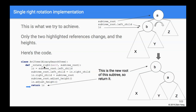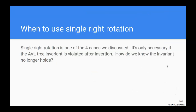Finally, as usual, any method that changes the structure of a subtree must return the new root of that subtree. In this case it's guaranteed to be a new root because we always bring up the left child of the old root. Node B is pointed to by `lc`, so that's what we return.